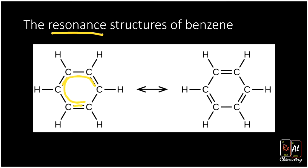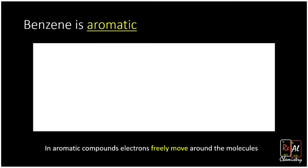There's a sense in which neither of these structures by themselves is a great representation of benzene, because the electrons aren't hanging out between two particular carbons — instead, all of them are free to roam in this big circle. That gives us another way to draw benzene, and benzene is called aromatic because of those freely roaming electrons.